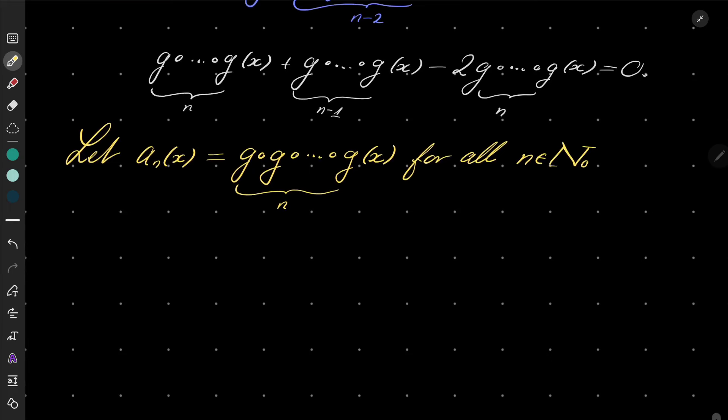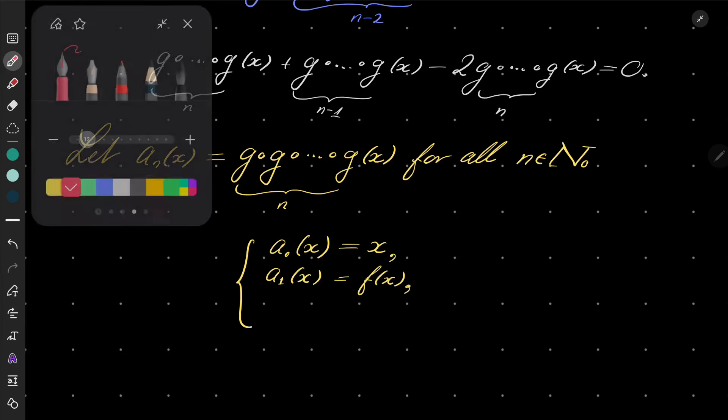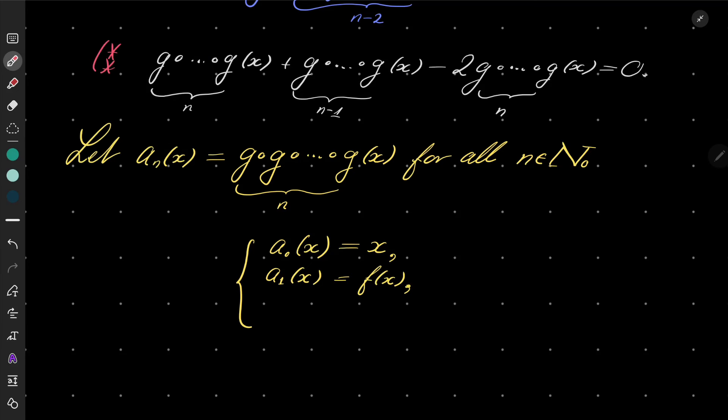Now I have a recursion. My sequence can be described by the following recursion: the zeroth composition is just x, the identity function; my first composition is just f(x).